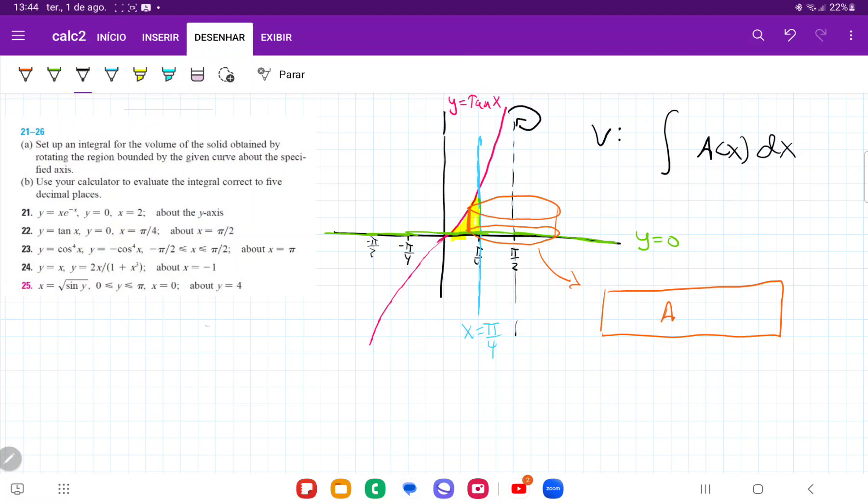And the reason that it's A(x) dx is because we're summing these cylinders horizontally. We're summing them up from x equals 0 all the way out to pi over 4. So what we have to do here is basically just find an expression for this area in terms of x. And now this area here, because it is a rectangle, this is base times height.